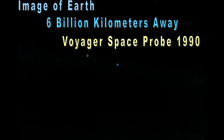This is a picture of Earth about six billion kilometers away, taken when we sent the Voyager space probe out into space back in 1990. It had a camera on it and was able to turn around and take a picture of our blue planet. This is a really important concept: the Earth has so much water on it that it even looks blue from space.